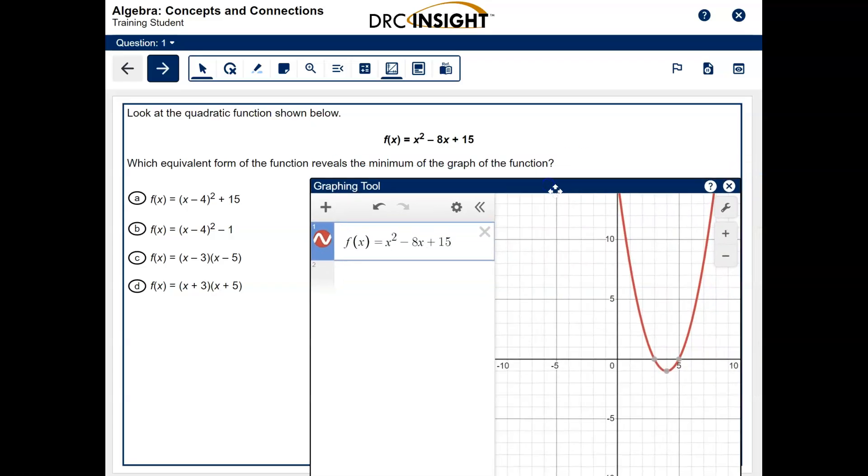Okay, and so here's the parabola. It says which equivalent form reveals the minimum. So a good idea is to click on the minimum so that you can see the minimum. I see four and negative one in this graph, and the minimum is actually the negative one. So I'm guessing answer choice B is correct because it's the only one that has both of those numbers in it.